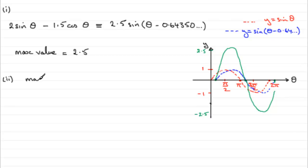So, we get our max when the value in here, that angle, theta minus 0.64350 and so on equals pi upon 2 radians. So, if you add the 0.64350, you're going to get pi upon 2 plus the 0.64350 and so on.